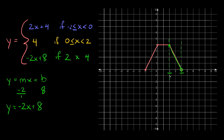Positive two, positive four. Here at positive two we have a closed circle, so x has to be greater than or equal to positive two. And over here at four we have an open circle, so x has to be less than four.